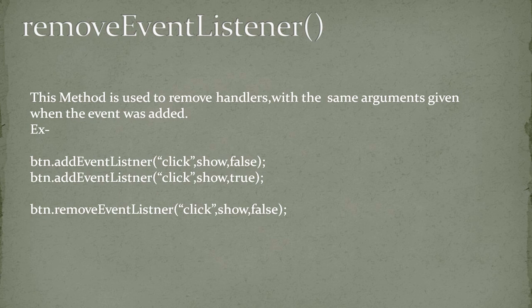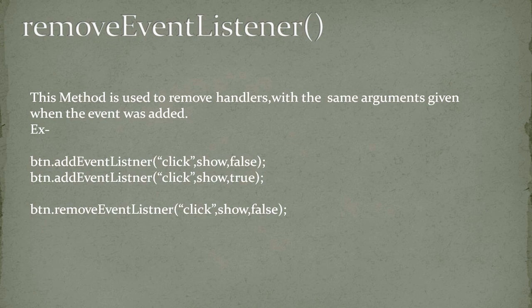This method is used to remove handlers with the same arguments given when the event was added. This means if you gave certain arguments to addEventListener, you have to use the same arguments in removeEventListener.